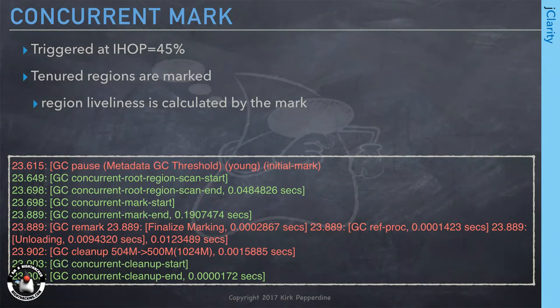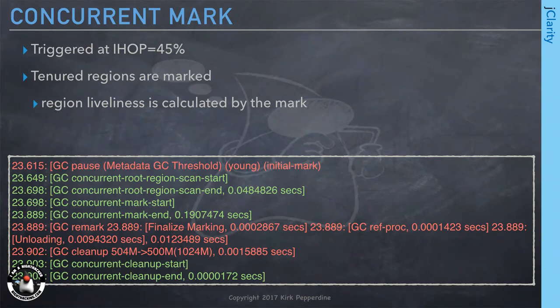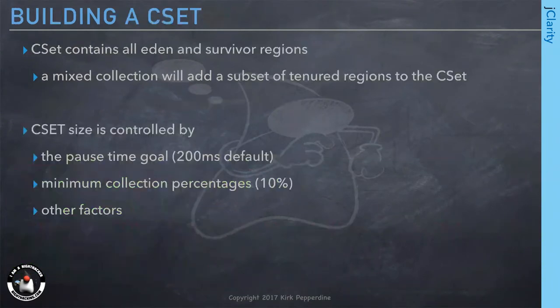These are the different phases. The red ones are Stop the World; the green ones run concurrently with your application. It starts with an initial mark piggybacked onto a young generational collection. Then it does root scanning and marking, then a remark—which tries to account for changes between when we started and when the remark happens, since the application runs concurrently with the GC. At the end, we do cleanup and resets. Notice: that's just a mark—there's no sweep.